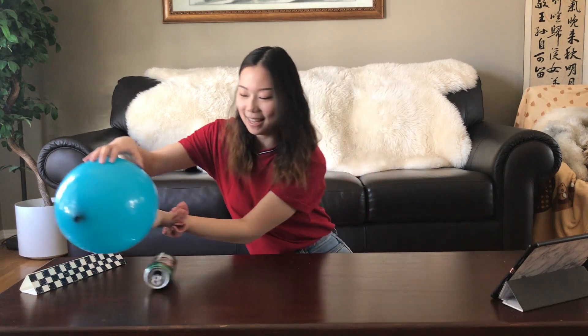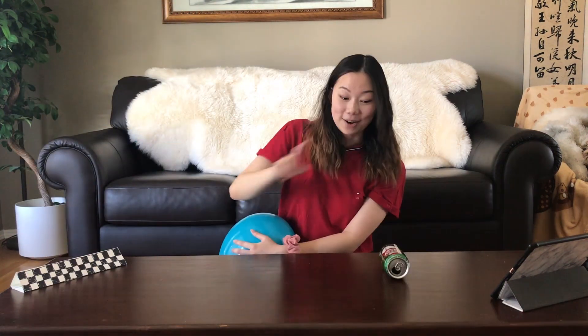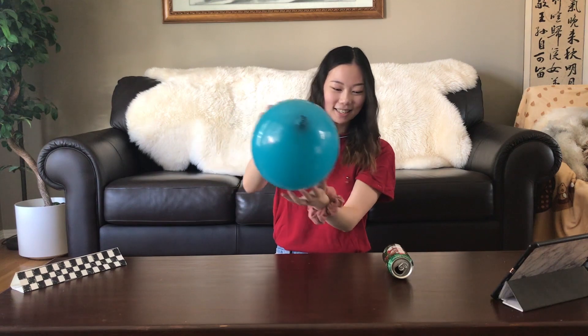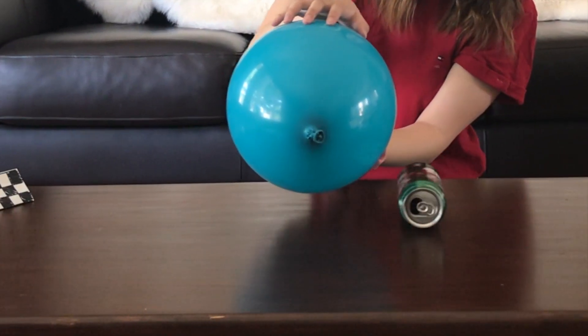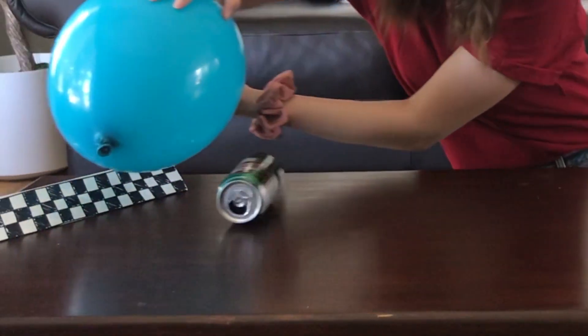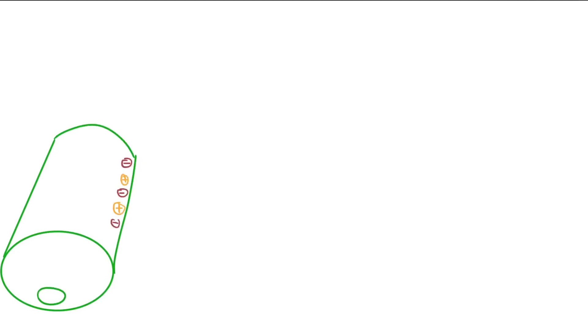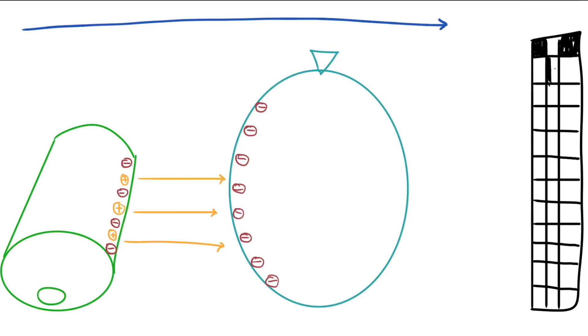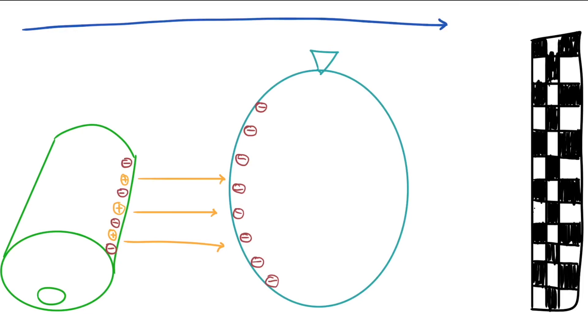It starts coming towards it! Notice how I'm pulling the pop can instead of pushing it. Why do you think I can move the pop can with the balloon? Let's draw out our neutral pop can — meaning it has the same amount of protons and electrons. Then our charged balloon has extra electrons near the surface. Because of the attraction of the protons to the electrons, as we move our balloon towards the finish line, the pop can will be attracted and move with it.